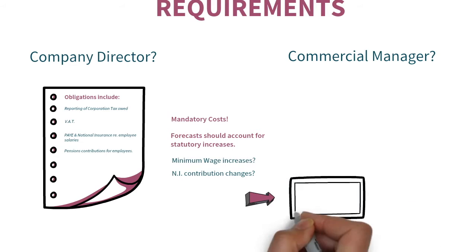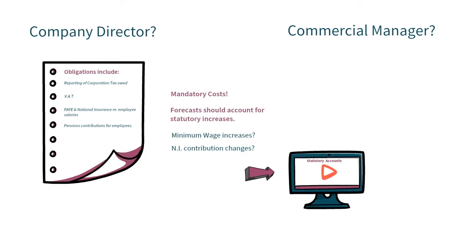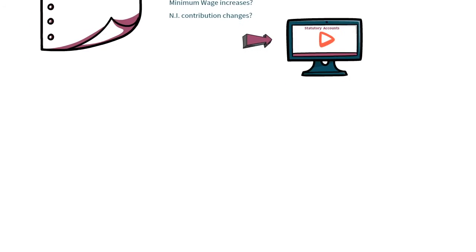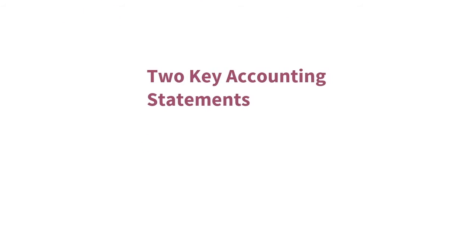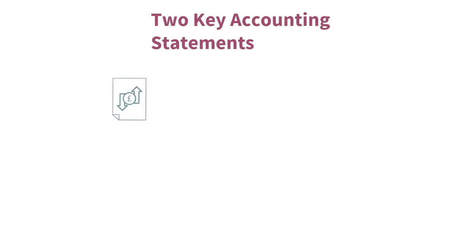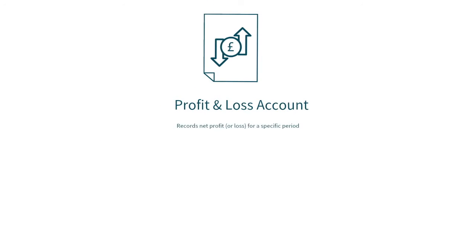We build more on this in the complementary session on statutory accounts. Before we consider the financial information we need to know, let's first have a quick overview of the two key accounting statements, understand what they actually show you, and why good awareness of this is important. The profit and loss account records your net profit associated with your trading activity over a specific period of time, showing whether you made a profit or a loss for that period.